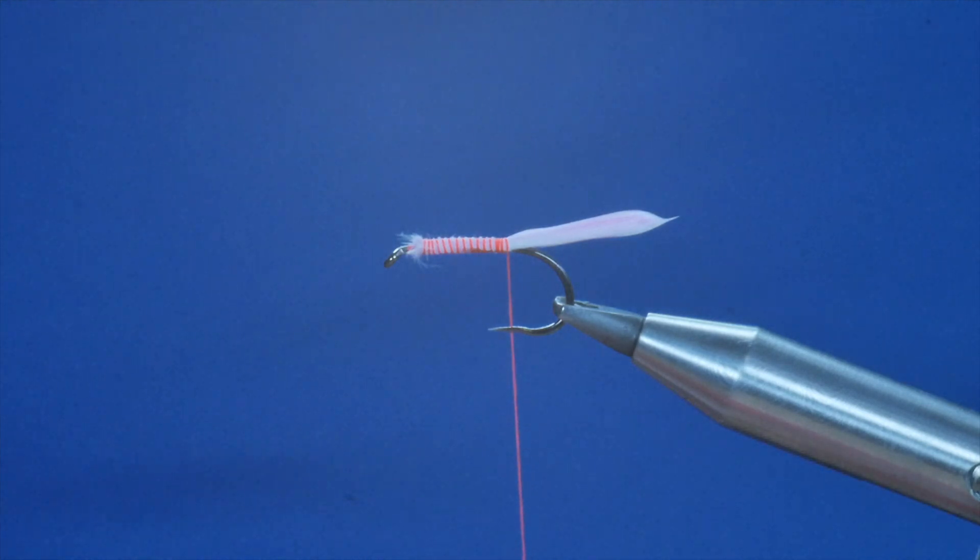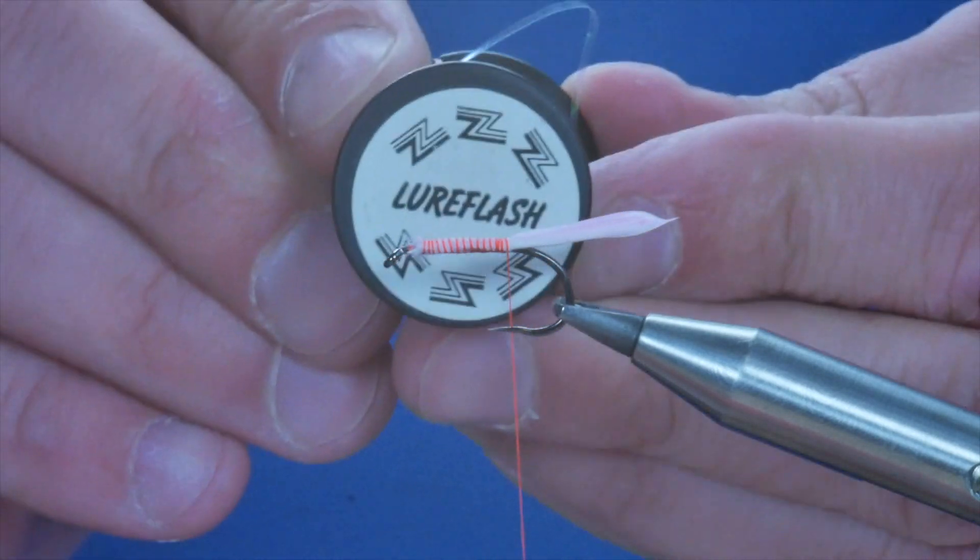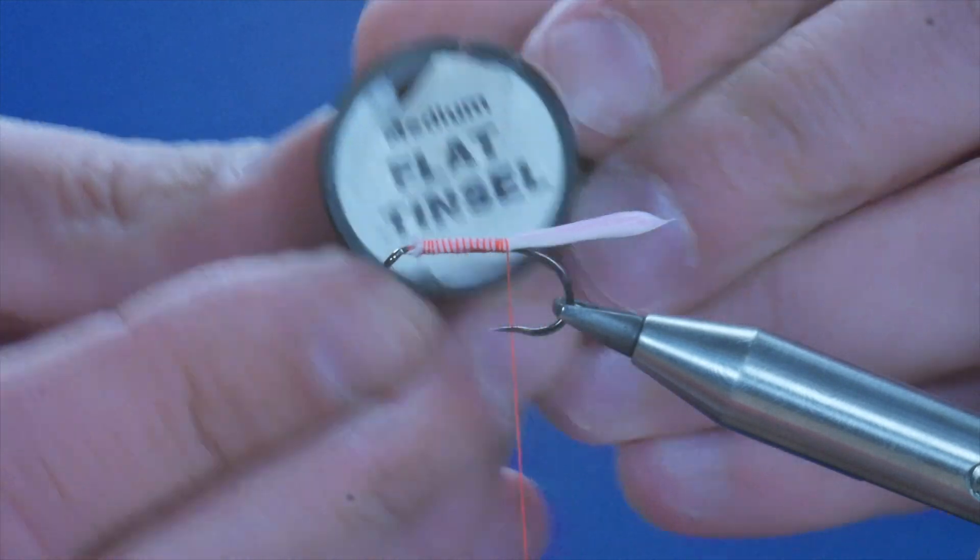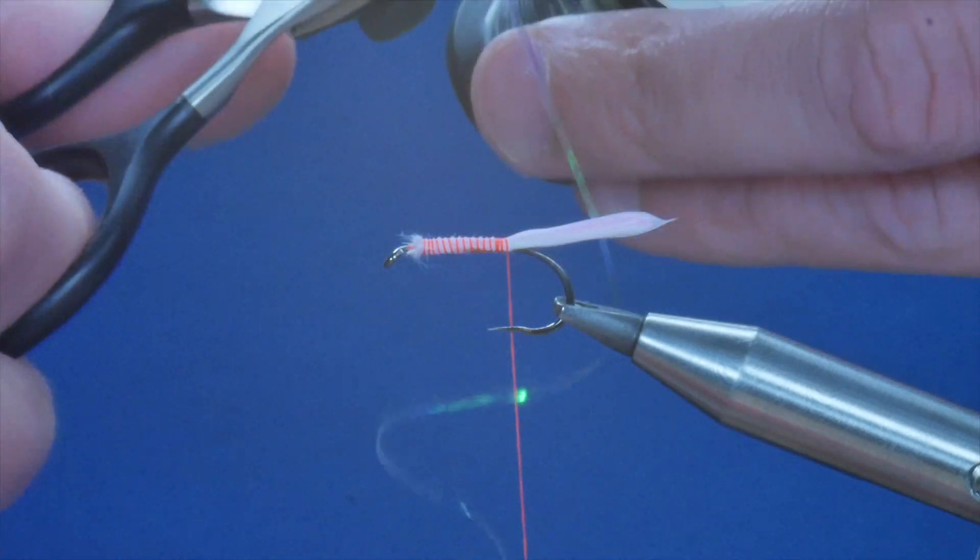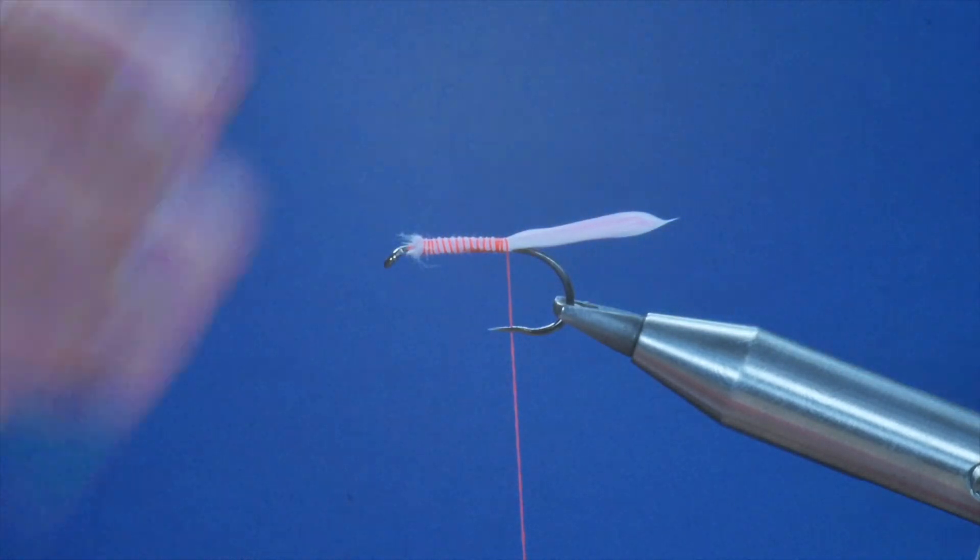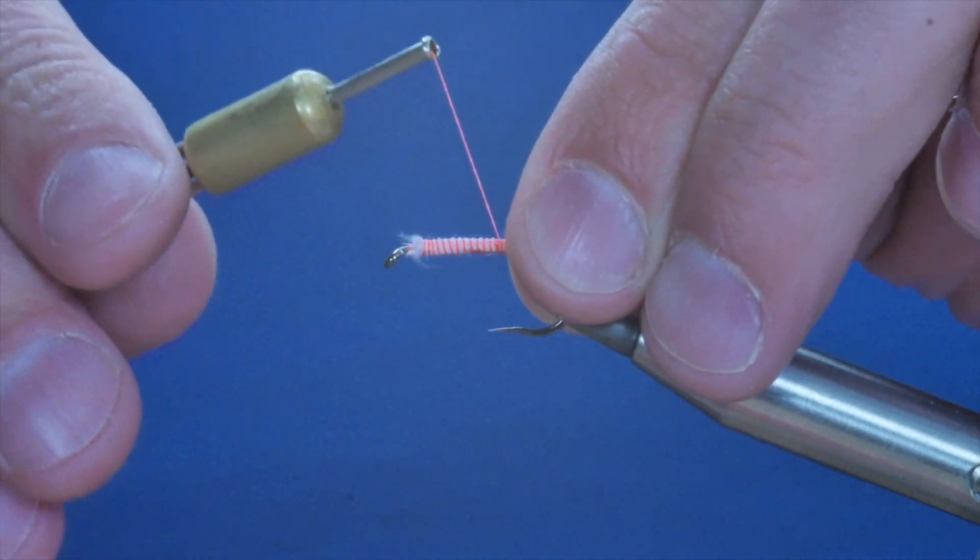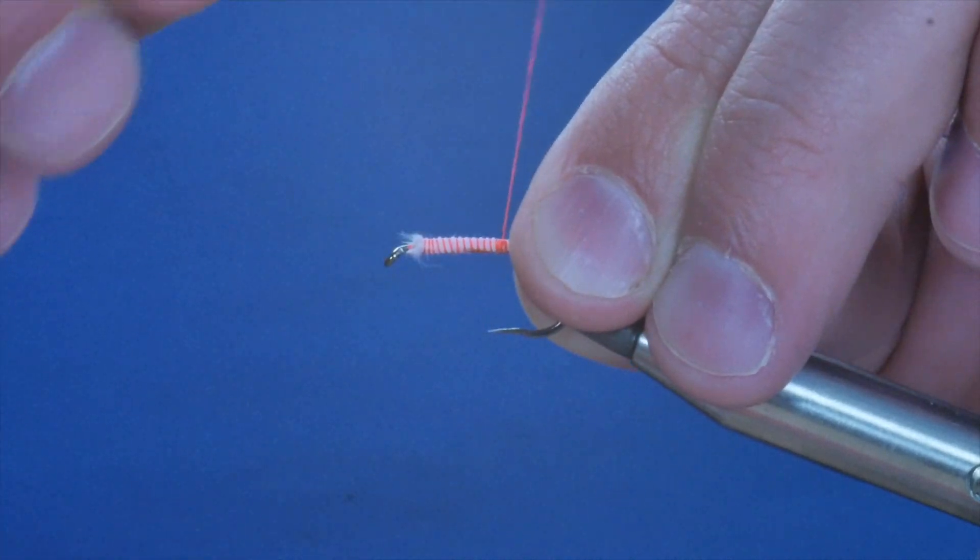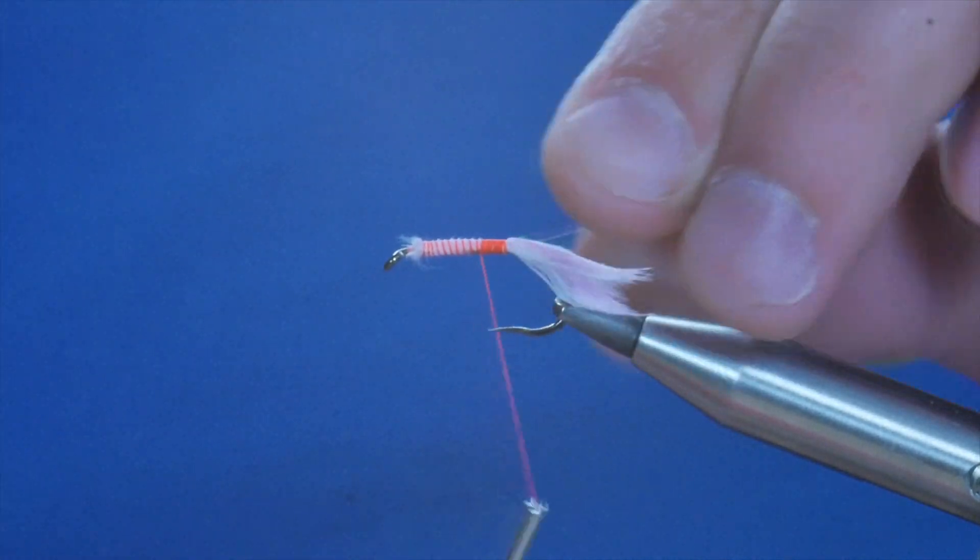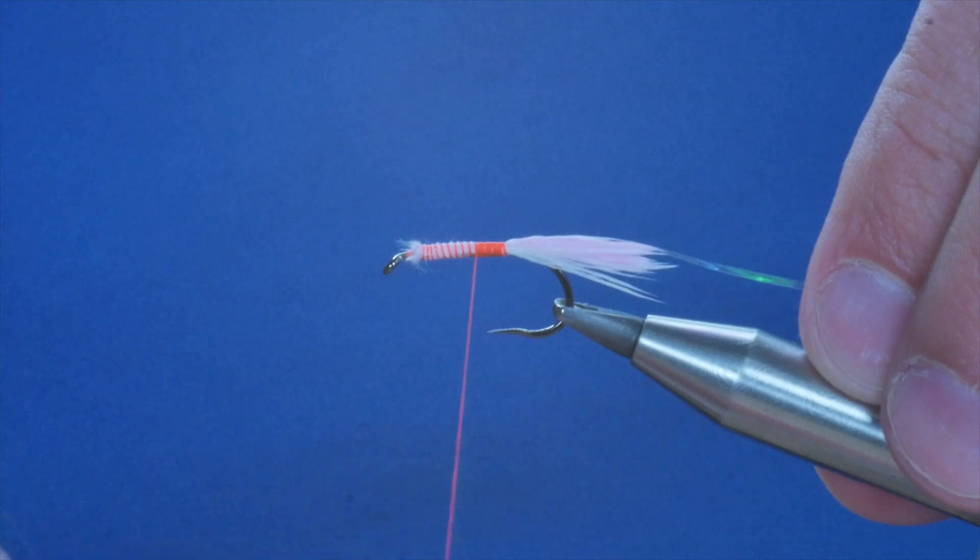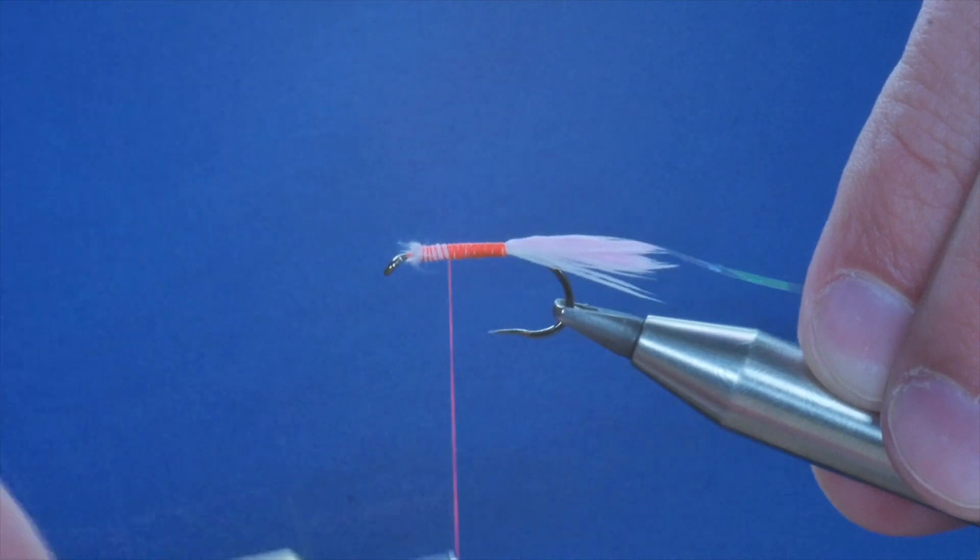Now the body of this fly is made up of lure flash flat tinsel, this is medium. I'll just take a bit of that off and I'm going to catch that in. Now just while I'm doing this, people have altered the fly to their own needs over the years. It's become quite a popular pattern, but this is the original tie, so with the fire orange thread and the flat tinsel.